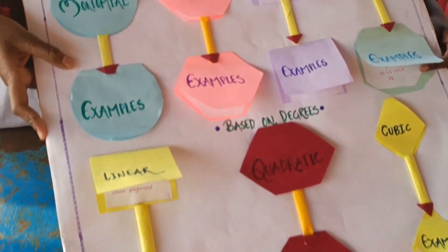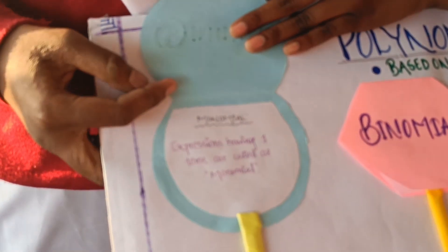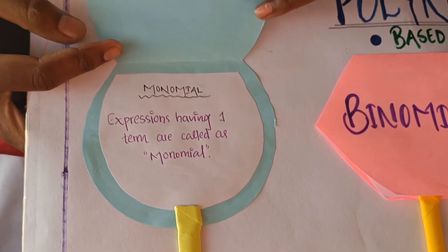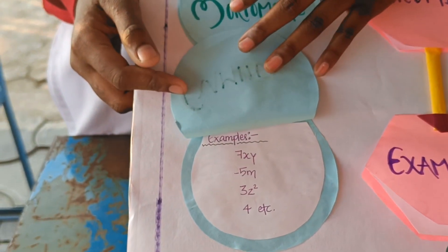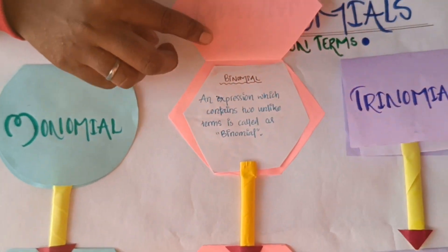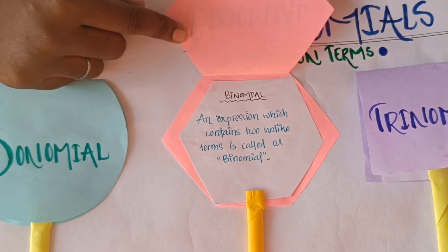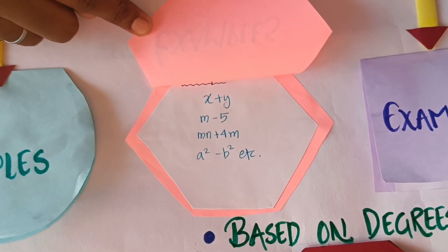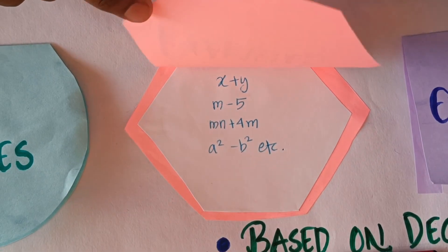Based on the terms, first is monomials. Monomials are expressions that have one term. For example, minus five and three. Second is binomials — expressions which have two unlike terms. For example, five minus y, x plus y, and a squared minus b squared.